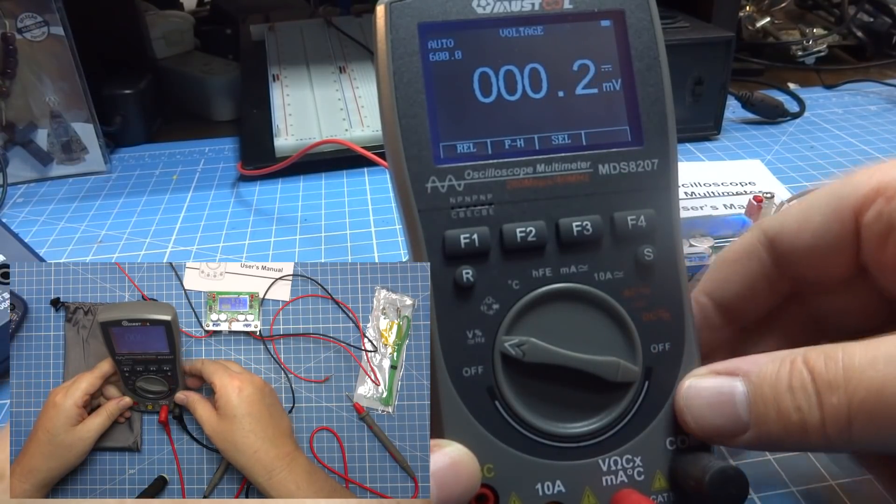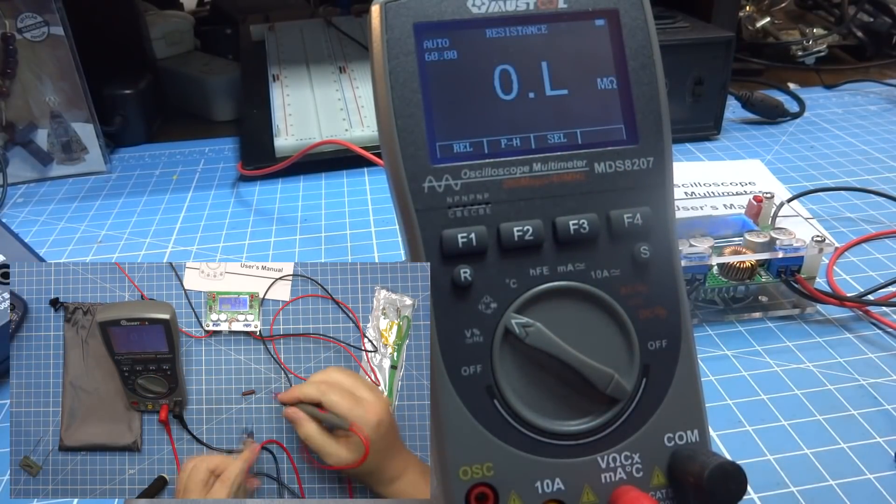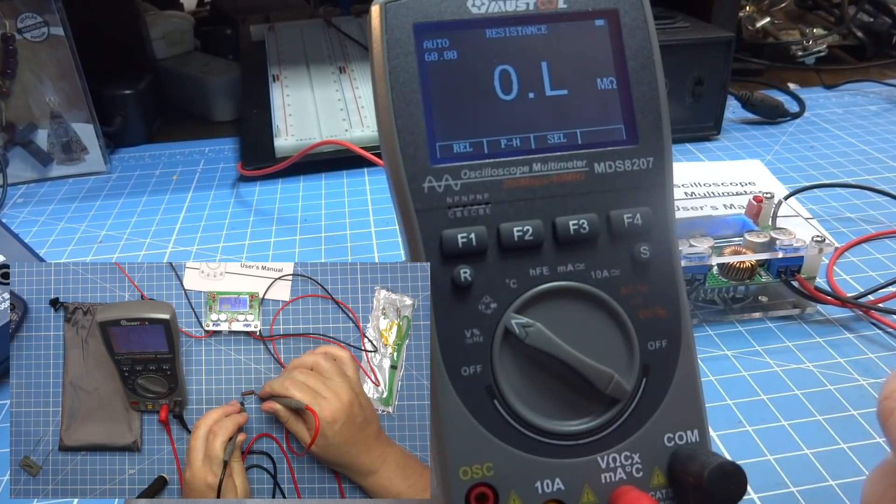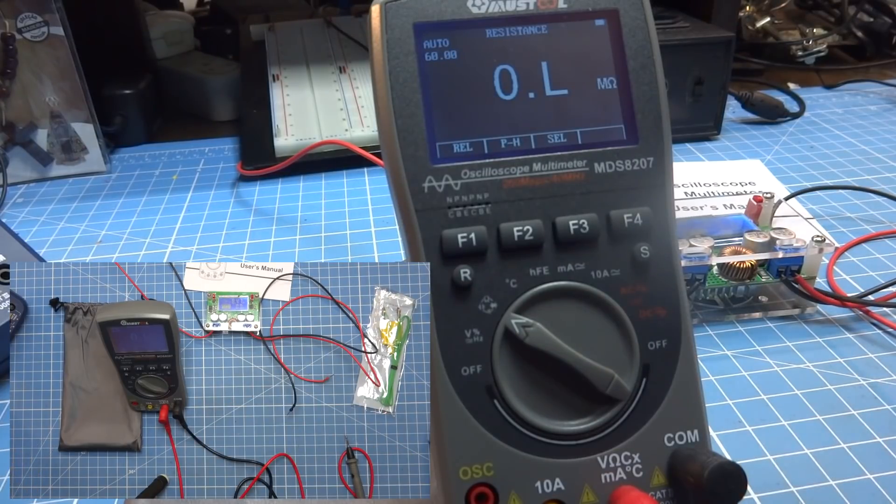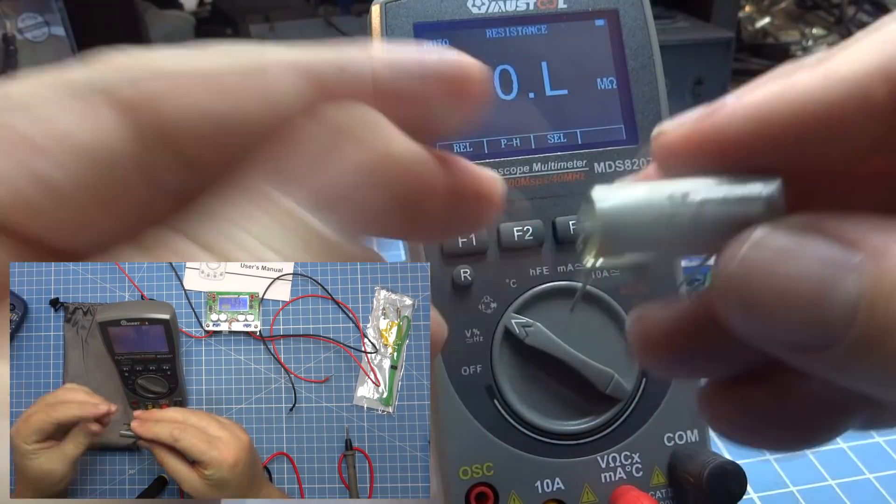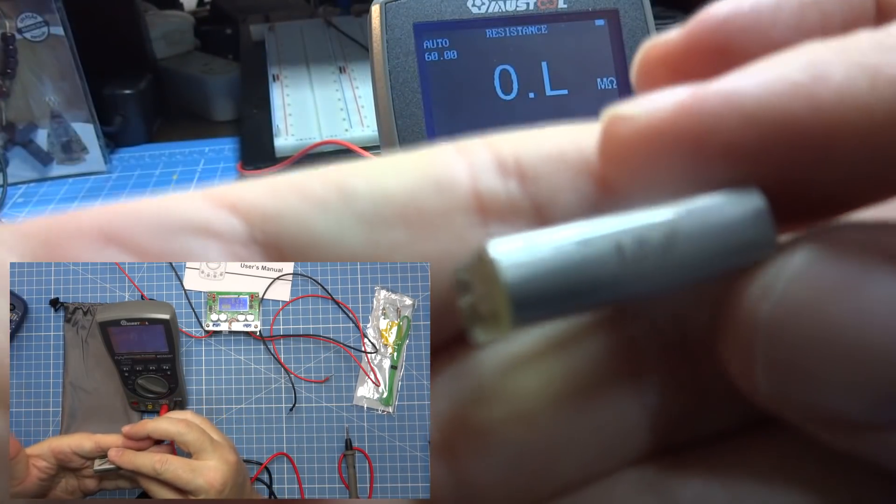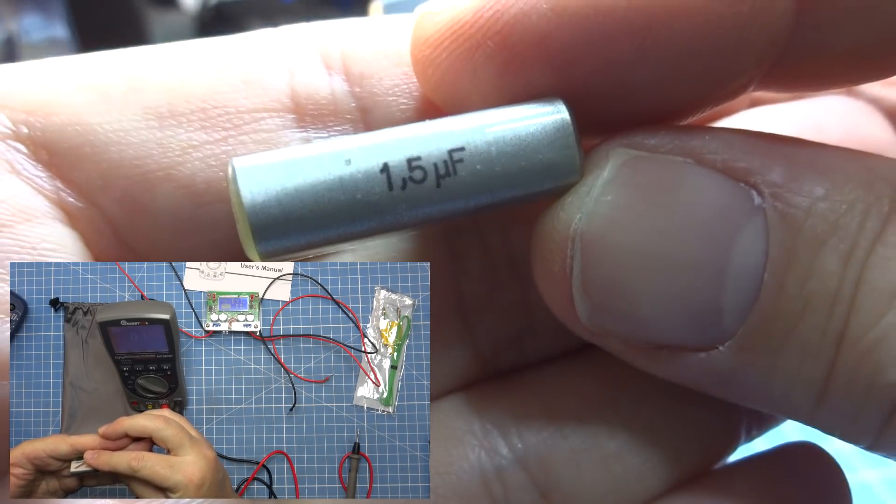Ele é um multímetro True RMS de 6.000 contagens. Aceita 750V AC e 1000V DC. Além disso, tem um ótimo capacímetro que permite leitura de 100 nF a 100 mF, e também frequencímetro. Conta com leitor de temperatura e ganho de transistores. Tudo mais que um bom multímetro contém, como medir tensão, corrente, tanto em AC quanto DC, limitado a 10 amperes.